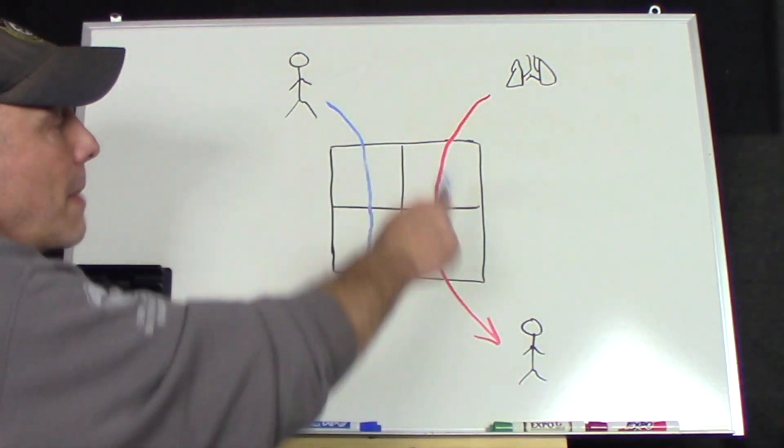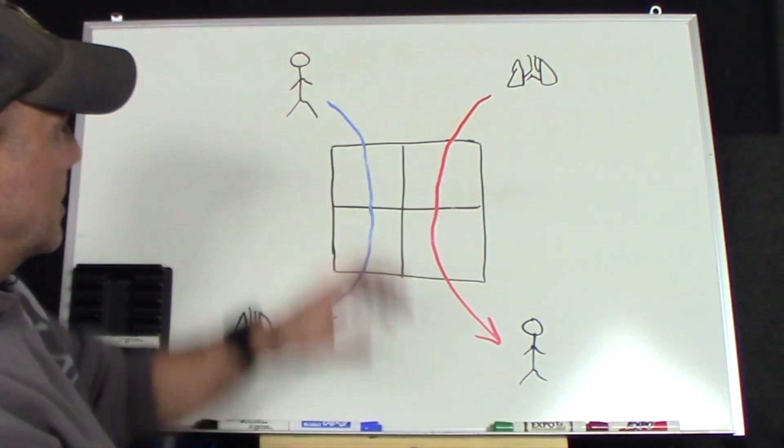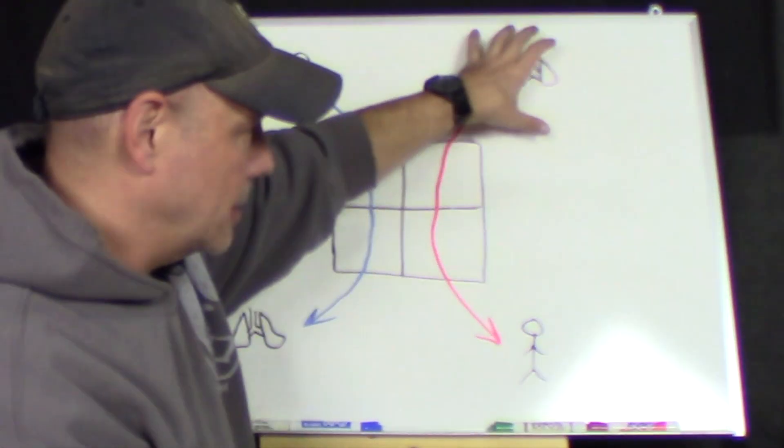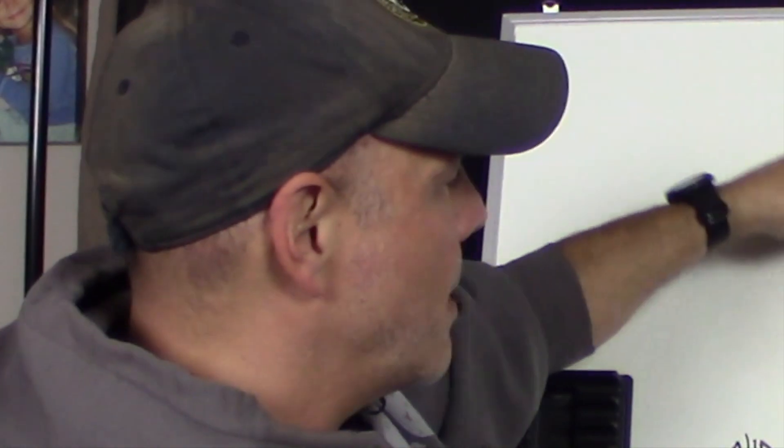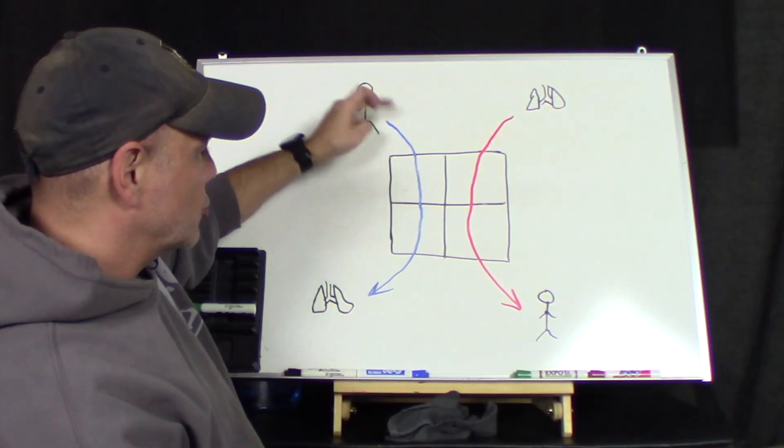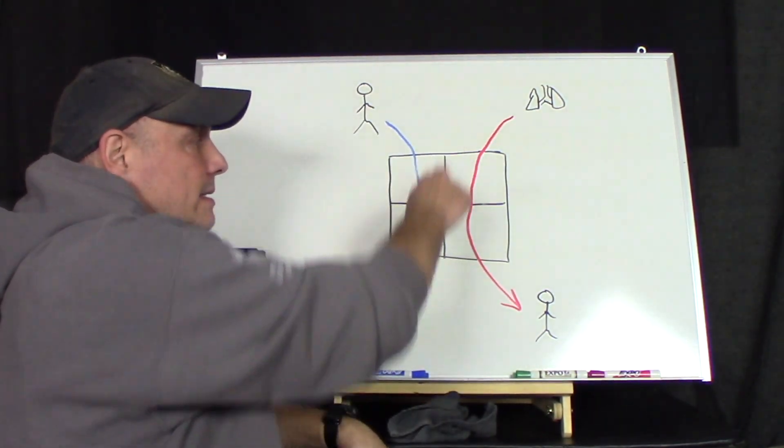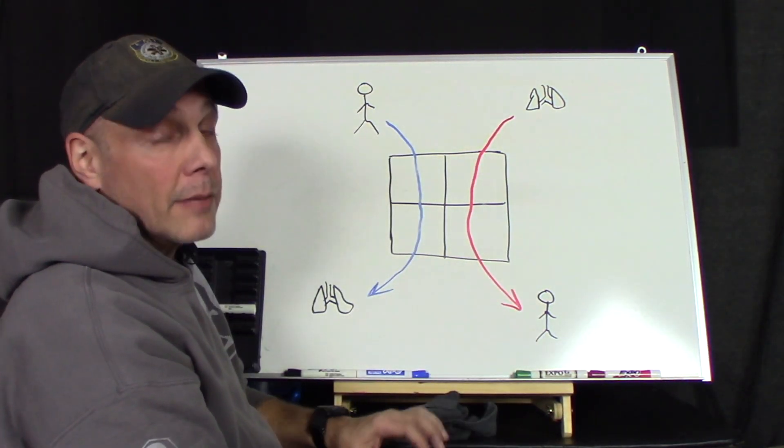So if you could remember this diagram as is. We got a body up here, a lung down here, a lung here and a body there. And you can remember the red and blue arrows traveling like that. This is the pathway that the blood will take.